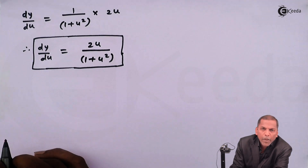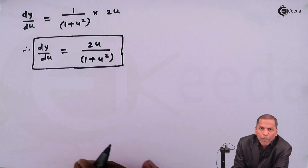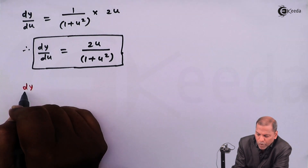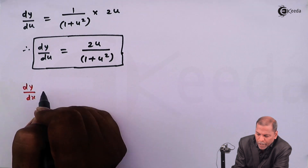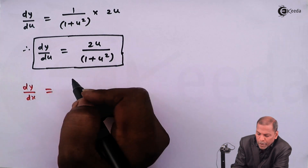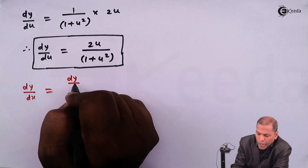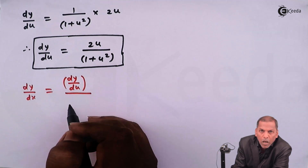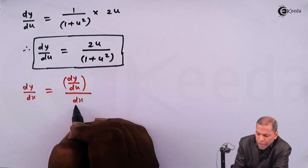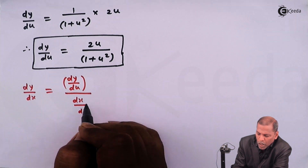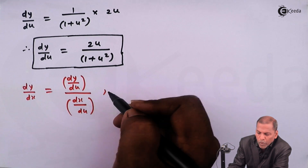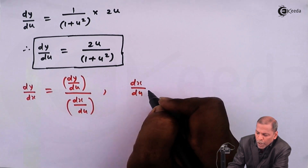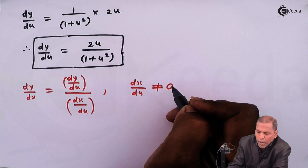Now we apply the theorem which is based on parametric functions. By using that theorem, dy by dx can be written as dy upon du divided by dx upon du, provided dx upon du is not equal to 0.